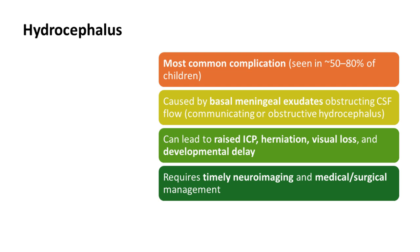Hydrocephalus leads to papilledema, raised ICP, visual loss, and developmental delay. Identify it early and start acetazolamide with sodium supplementation to avoid pH disturbances. These patients will also require early shunt surgery — initially an external reservoir or Ommaya chamber may be placed, then a permanent shunt depending on the neurosurgery team's assessment.